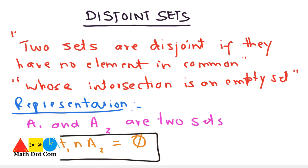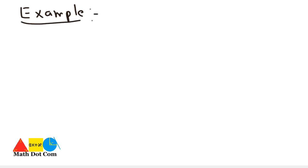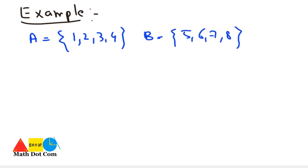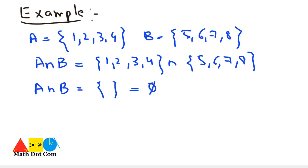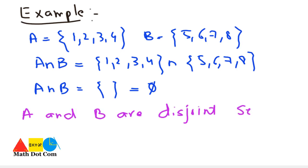You have to keep in mind this condition to check whether the given sets are disjoint or not. For example, set A equals {1, 2, 3, 4} and set B equals {5, 6, 7, 8}. Taking their intersection: {1,2,3,4} intersection {5,6,7,8} — there is no element in common, so the result is an empty set. This shows that A and B are disjoint sets.